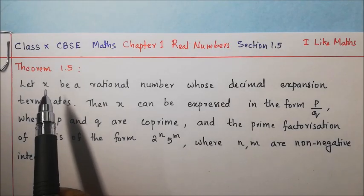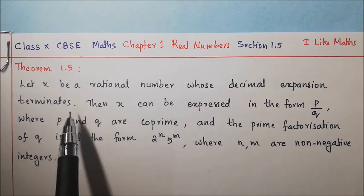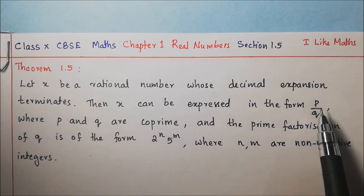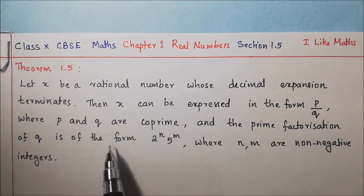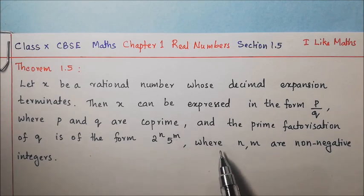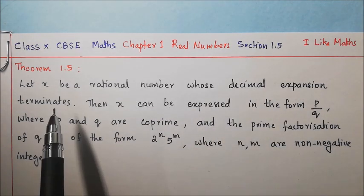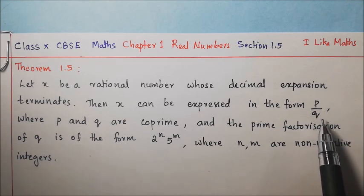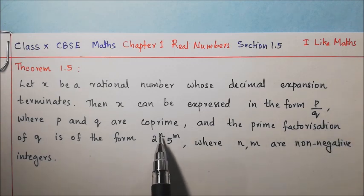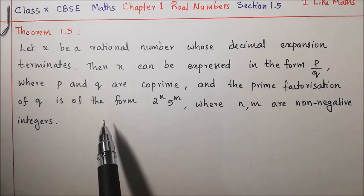Let us state this formally as Theorem 1.5: Let x be a rational number whose decimal expansion terminates. Then x can be expressed in the form p by q where p and q are co-prime, and the prime factorization of q is of the form 2 to the power n into 5 to the power m, where n and m are non-negative integers.